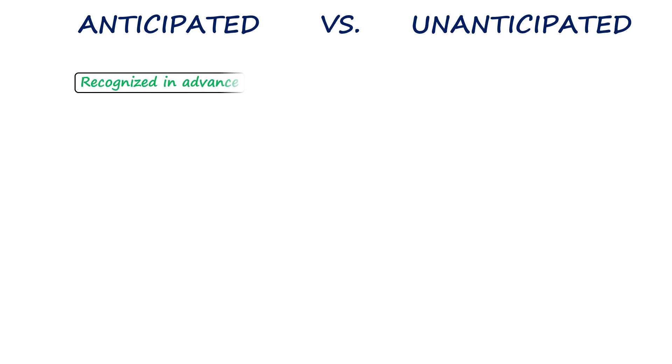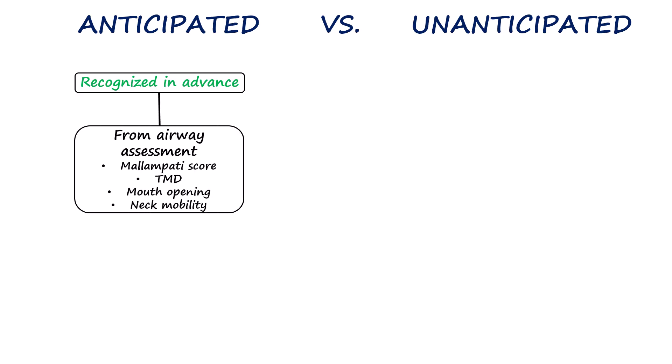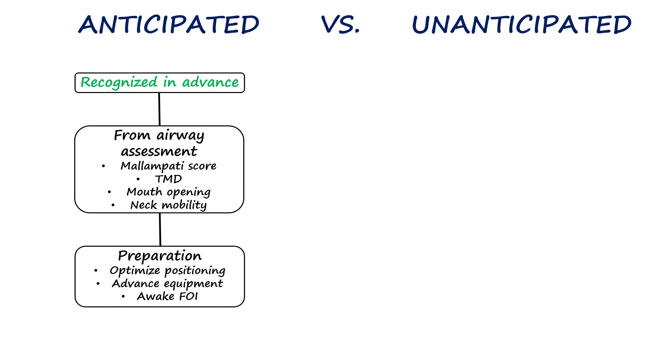There are two main situations in which a difficult airway may occur: anticipated and unanticipated airway difficulty. An anticipated difficult airway is recognized before induction through assessment of factors such as Mallampati score, thyromental distance, mouth opening, and neck mobility, allowing the anesthesiologist to prepare with optimized positioning, advanced devices, additional help, or even awake fiberoptic intubation.